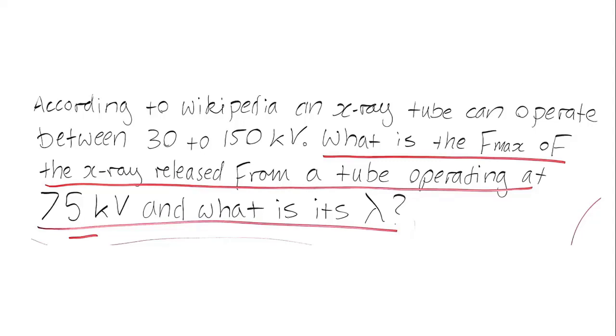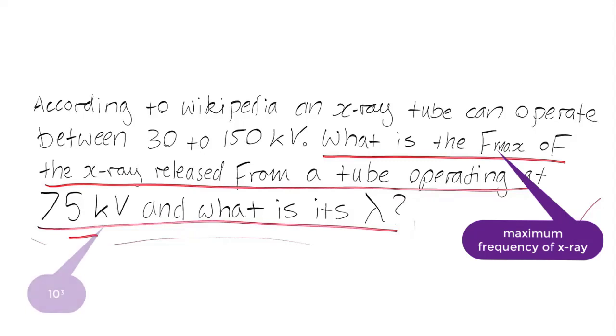According to Wikipedia, an x-ray tube can operate between 30 to 150 kilovolts. What is the f_max of the x-ray released from the tube operating at 75 kilovolts and what is its lambda? Remember that f_max is the maximum frequency of the x-ray, kilo means by 10 to the 3, and lambda is wavelength.